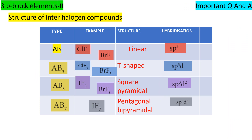Structure of interhalogen compounds — very important table. Type AB (e.g., ClF, BrF): linear shape, SP3 hybridization. Type AB₃ (e.g., ClF₃, BrF₃): T-shape, SP3D hybridization. Type AB₅ (e.g., IF₅, BrF₅): square pyramidal shape, SP3D2 hybridization. Type AB₇ (e.g., IF₇): pentagonal bipyramidal shape, SP3D3 hybridization.